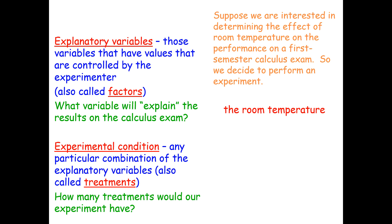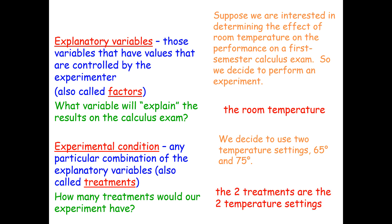An experimental condition is any particular combination of the explanatory variables. We also call these treatments. For example, we decide to use two temperature settings: 65 degrees and 75 degrees. So, we would have two treatments — the two temperature settings.